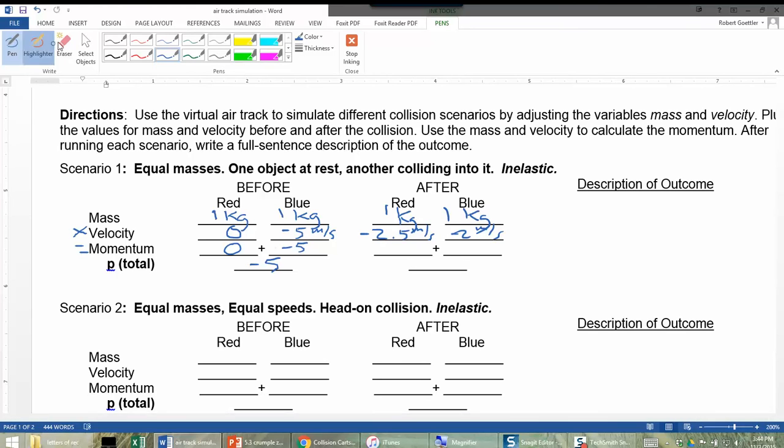Let me fix that. And when we multiply these, we get one kilogram times negative two point five meters per second is negative two point five meters per second.